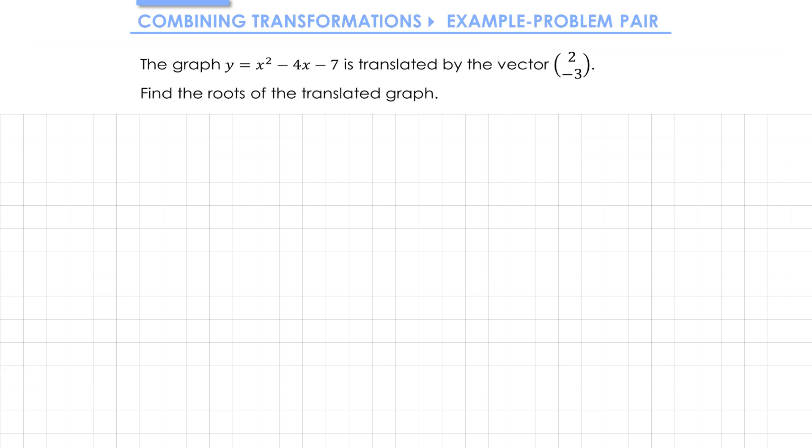Our translation of (2, -3) could be split into two translations: 2 in the x direction and -3 in the y direction. As they're in perpendicular directions, it doesn't matter which order we apply them in, so we can actually apply them both in one go.